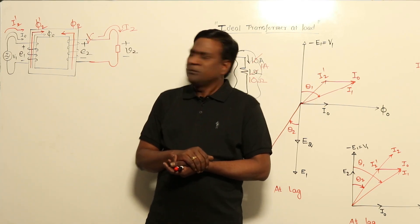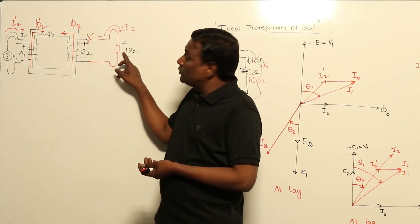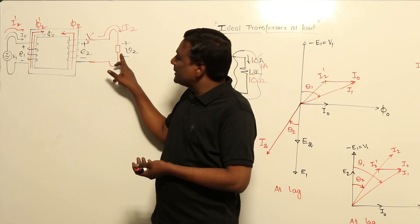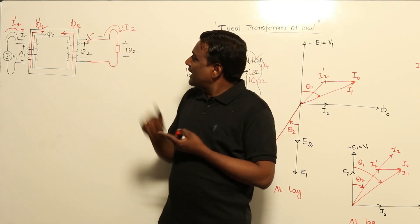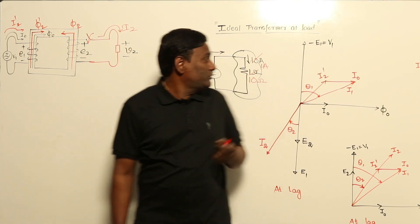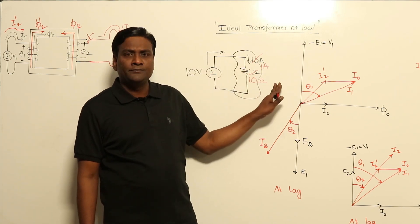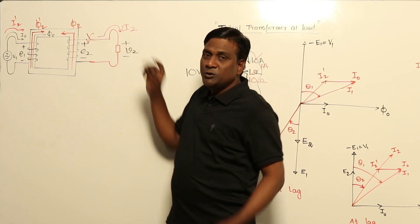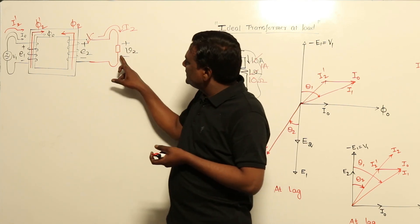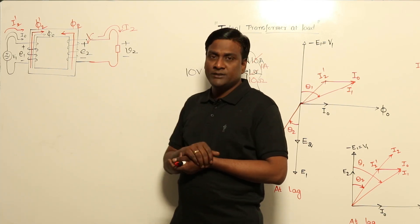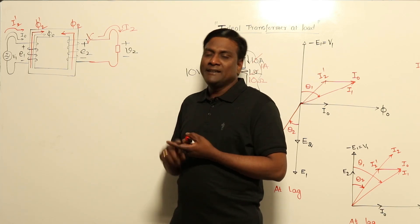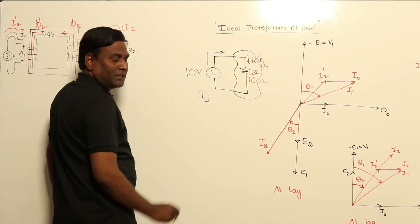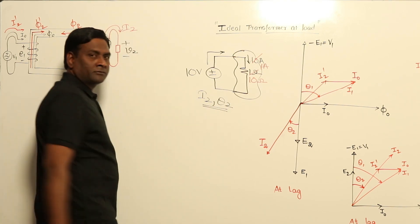In a transformer there are two independent variables. The load impedance magnitude can be any value — if impedance magnitude is less, current will be more; if more, current will be less. So the magnitude of I2 is decided by the load. Also, the load can be inductive, capacitive, or purely resistive, so the operating power factor can be lagging, leading, or unity.